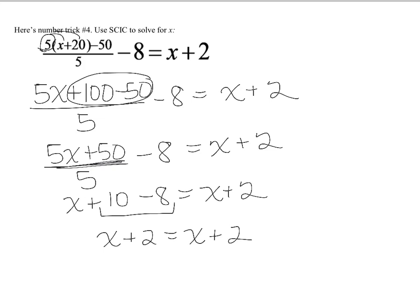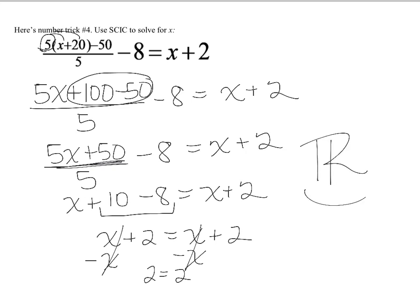At this step, we can see it doesn't matter what x is — both sides of the equation are the same, so any number could work. However, following SCIC, we collect variables to one side. Subtracting x from both sides, the x's cancel out and we're left with 2 equals 2. Since variables cancel out completely and we're left with a true statement, the solution is all real numbers.